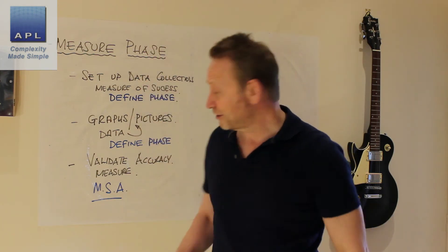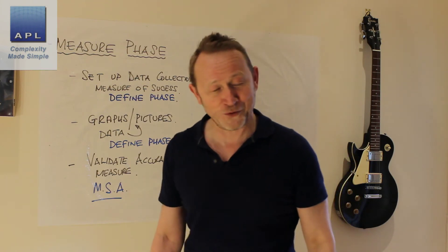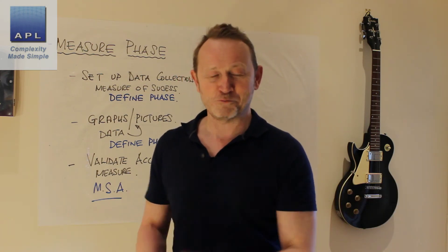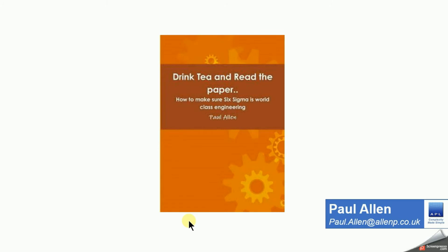Once you've done that, and fixed any MSA issues, you're ready to move on — you've completed Define and Measure and you're ready to go to Analyze, Improve, and Control. If you'd like to know more, my latest book 'Drink Tea and Read the Paper' covers everything you need to know about making Six Sigma world-class engineering in your company. If you'd like a little help with Lean or Six Sigma, please contact me on the email below.